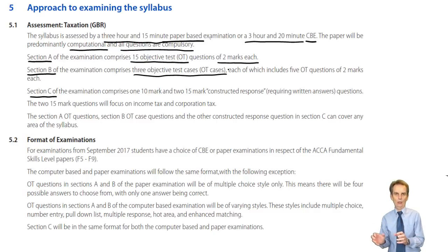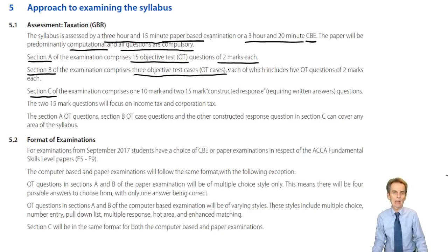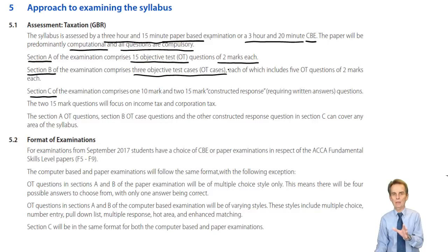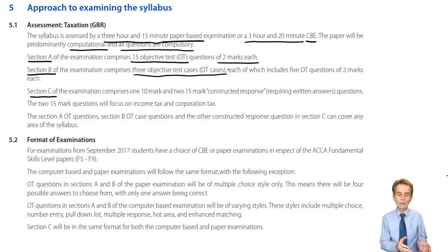As well as income tax and corporate tax, the other big taxes are CGT, IHT, and VAT — and there are three questions in Section B in objective testing case study format. The probability is that's where you'll find those three questions: on capital gains tax, on inheritance tax, and on VAT. Section A was a random selection across all taxes, whereas Section B and Section C are likely to be more prescriptive and defined.